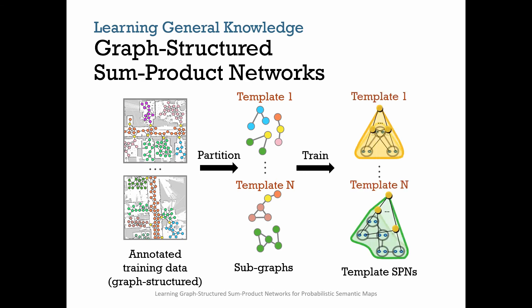We can partition these graphs into subgraphs using a predefined set of template subgraph structures. Then, for each sub-structure, we learn a template SPN end-to-end using the subgraphs as the training data. The set of template SPN models is referred to as a Graph SPN model.